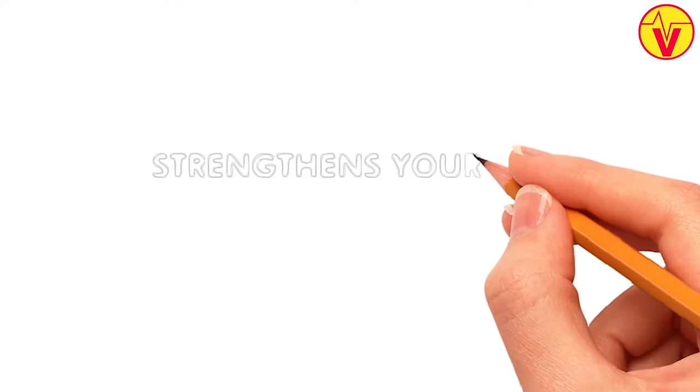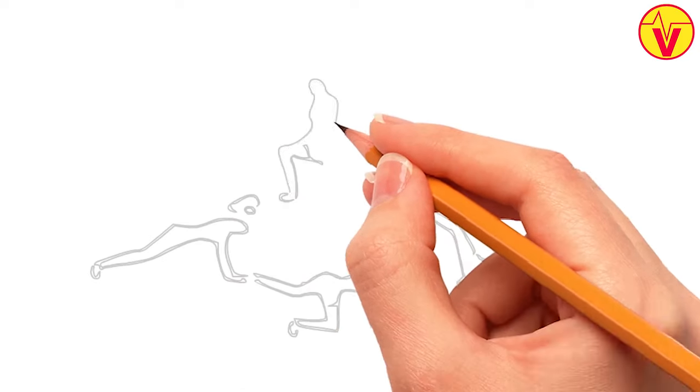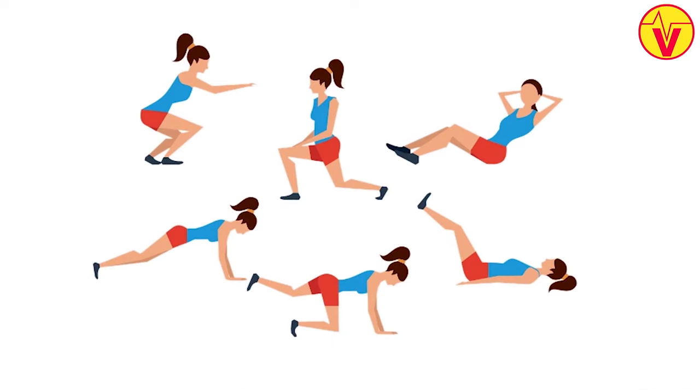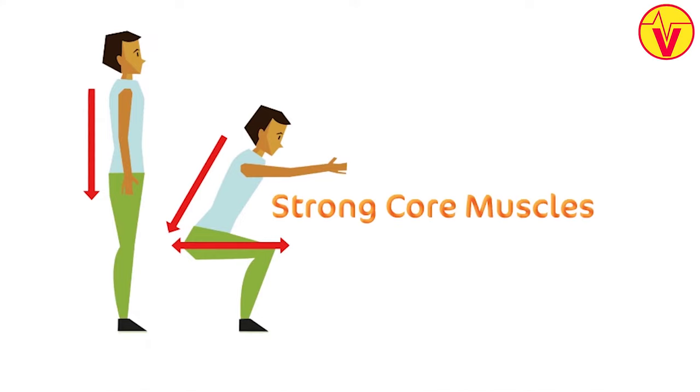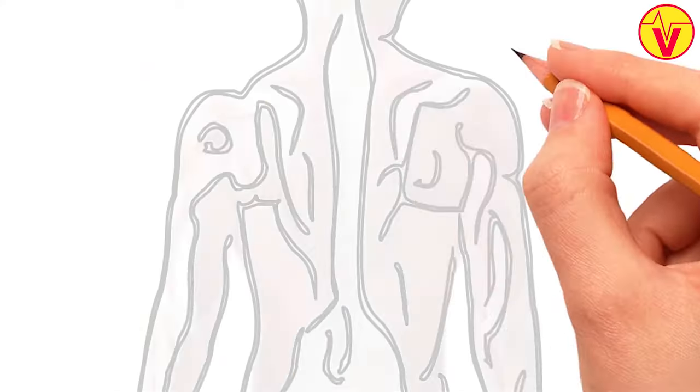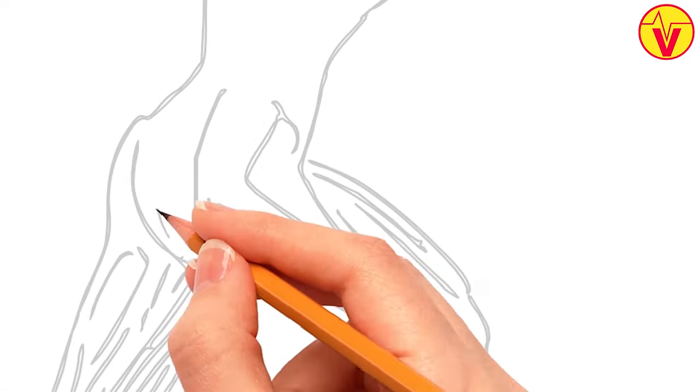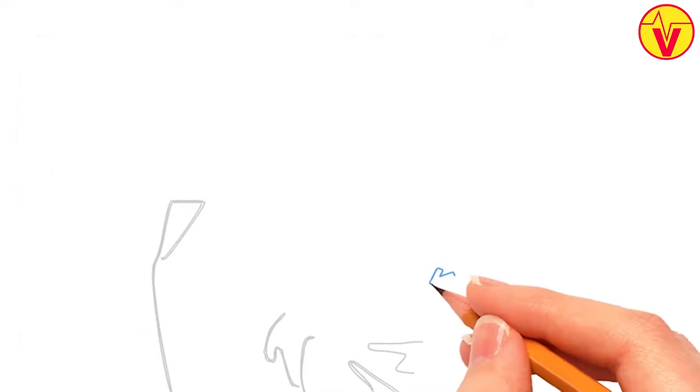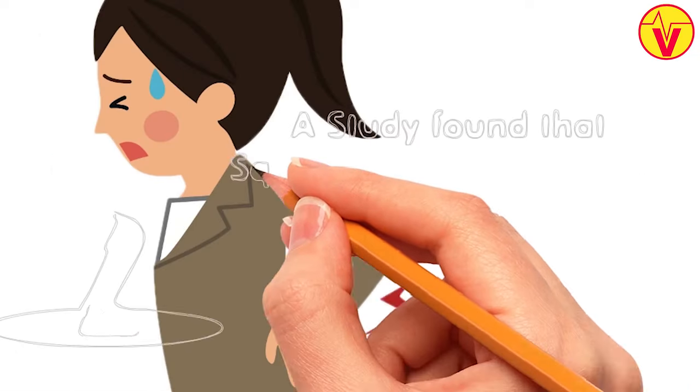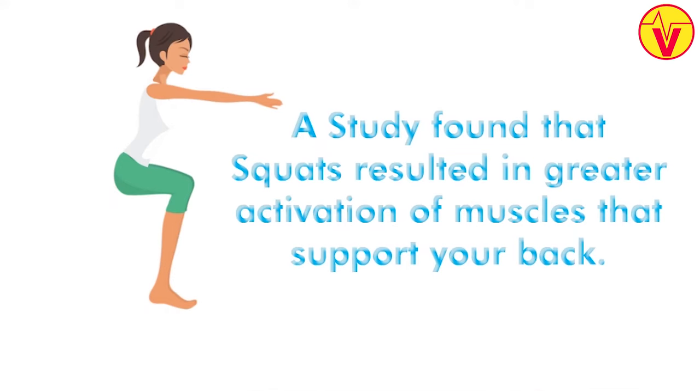1. Strengthens your core. Everyday movements like bending, turning, and even standing are made more comfortable if you have strong core muscles. Moreover, a strong core can significantly improve your overall balance, make it easier to maintain a good posture, and even ease back pain. A study found that squats resulted in greater activation of muscles that support your back.